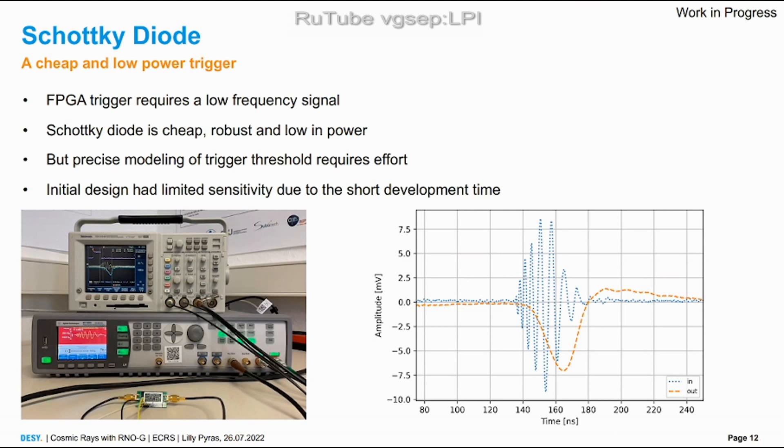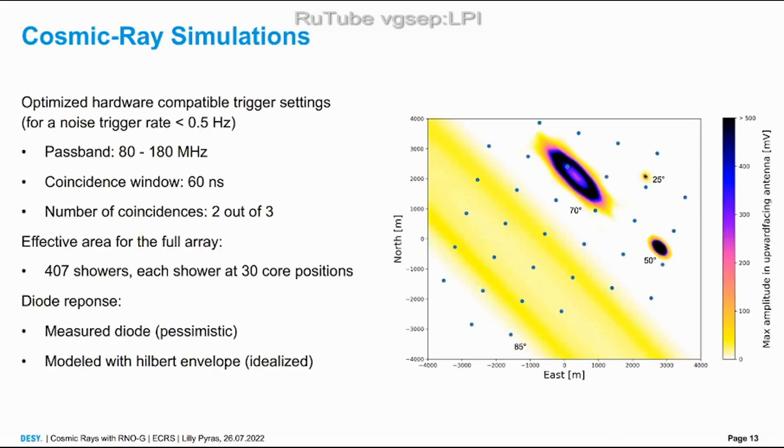The initial trigger design has really limited sensitivity because we were short in time and hardware like most experiments are. Here's a cosmic ray simulation. You probably all know those footprints. Very inclined showers of course are able to cover a bigger area of our detector, but also with 50 degrees we might be lucky to get one. Here are the parameters I used for the trigger. I used 407 showers, simulated the effective area with two different trigger diode response settings, so the smoothing of the trace basically.